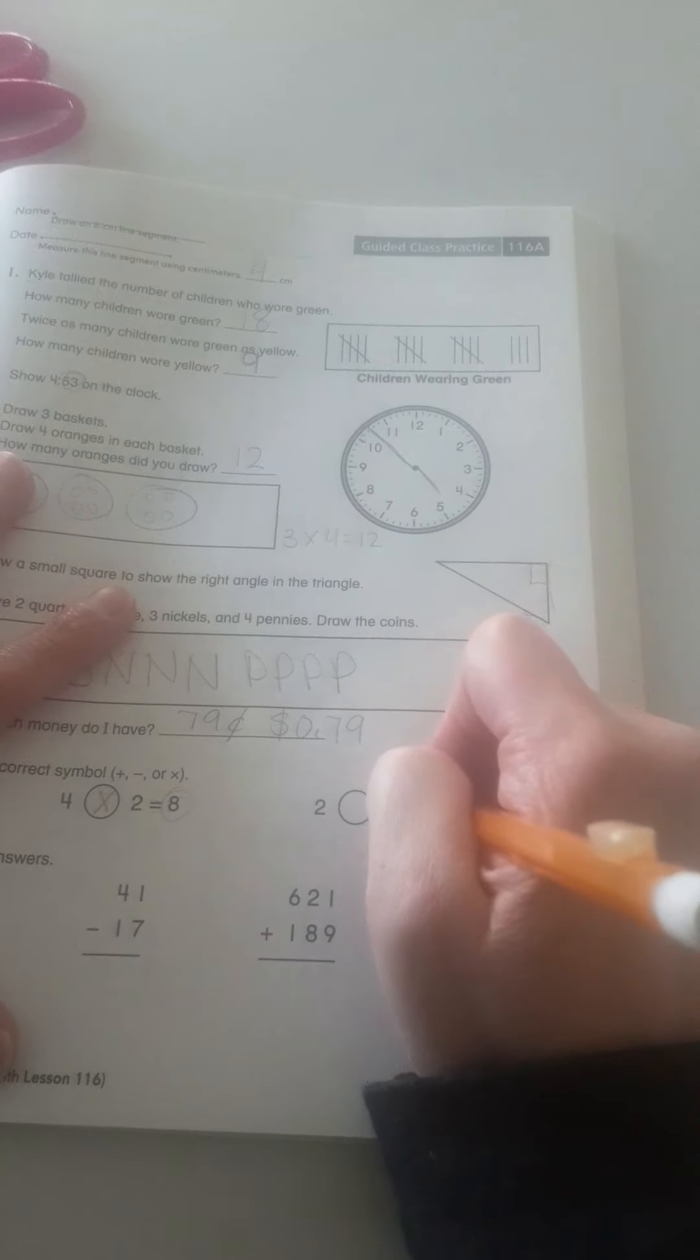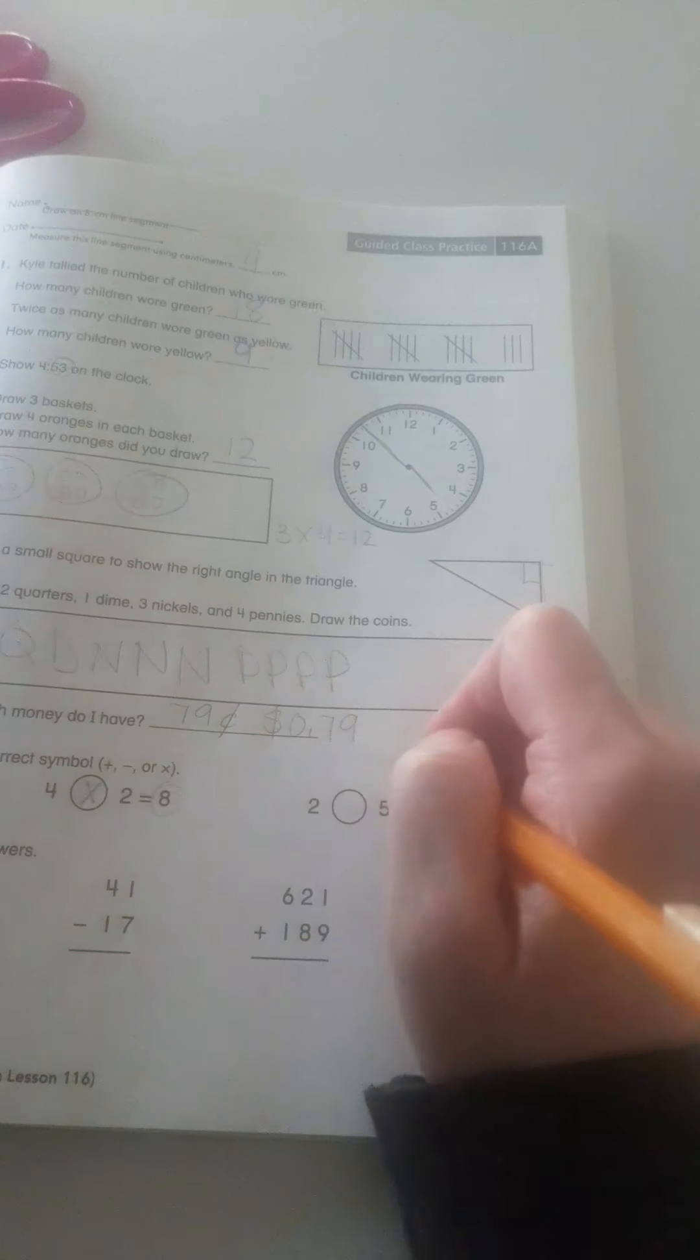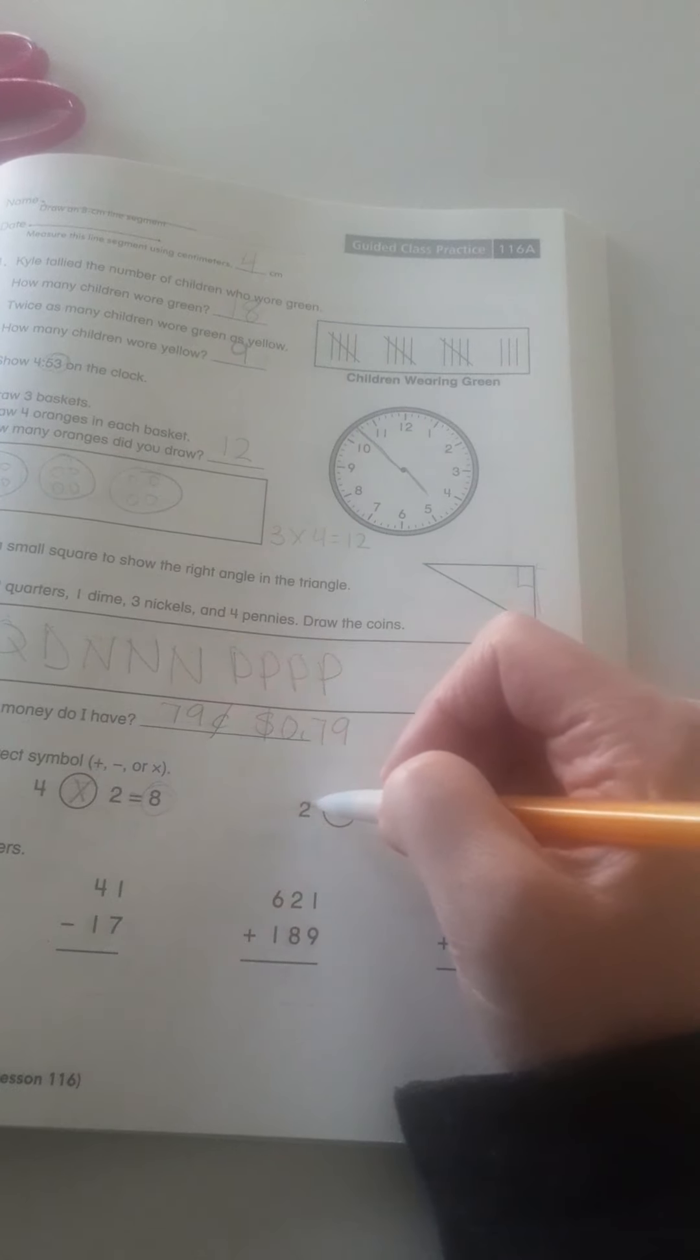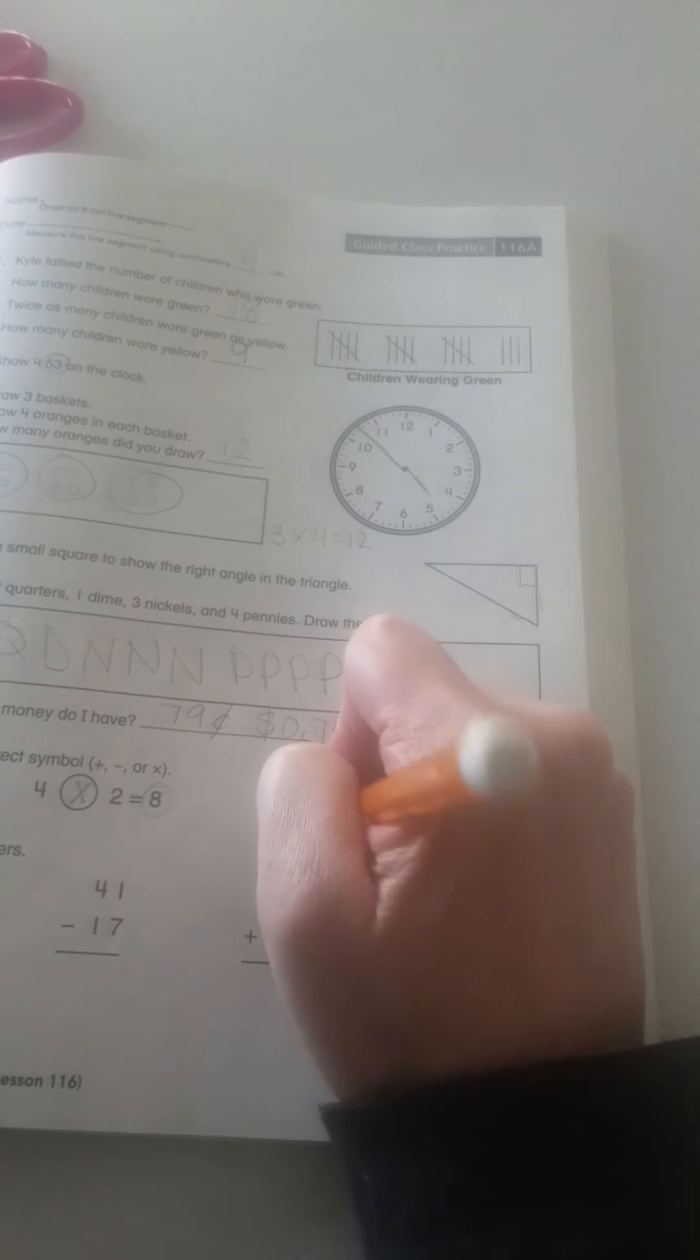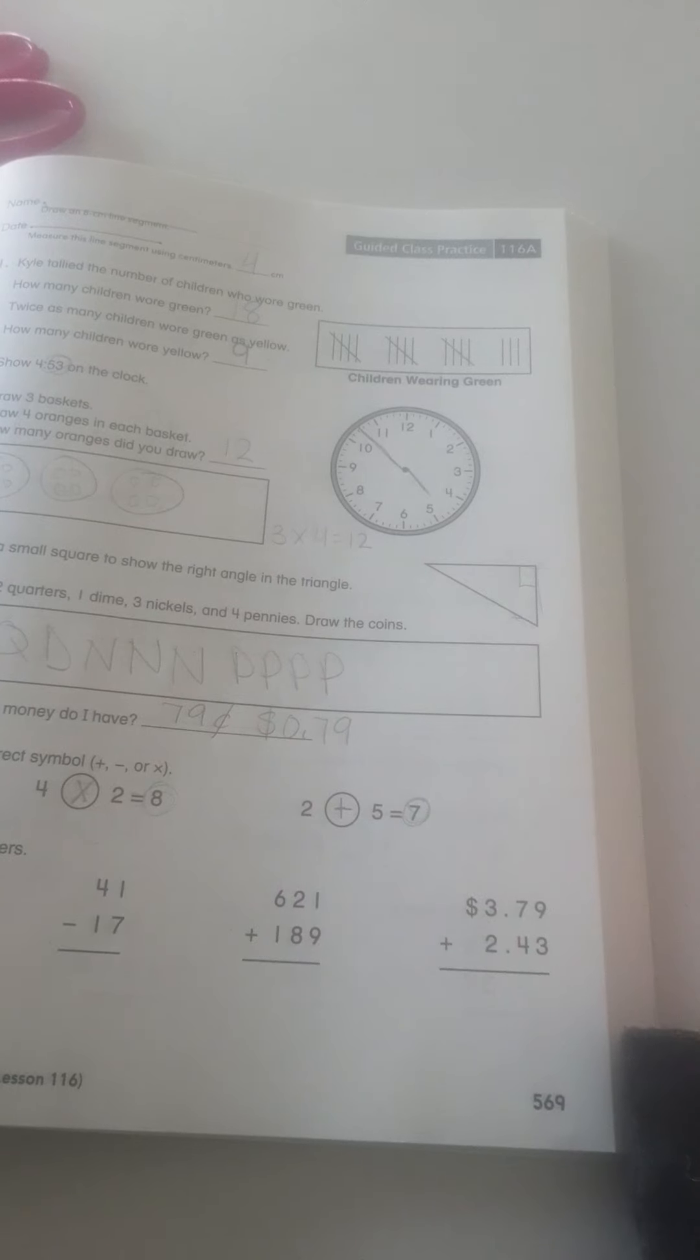Alright. So, now, it needs to equal 7. Well, let's start with the addition. 2 plus 5. Oh, there we go. Right away. I know that that is addition.